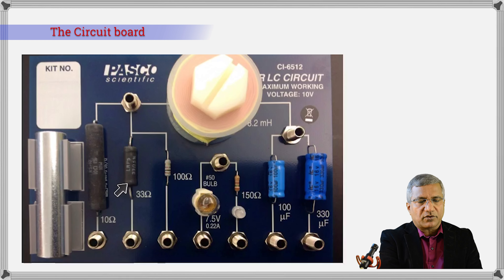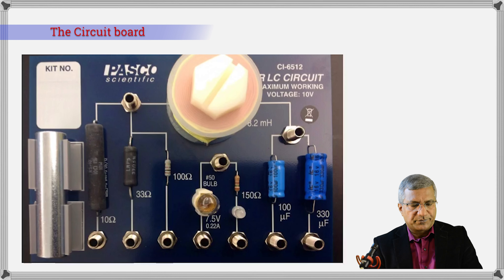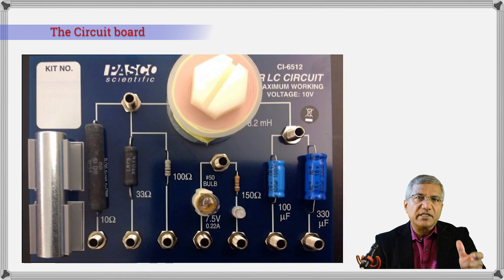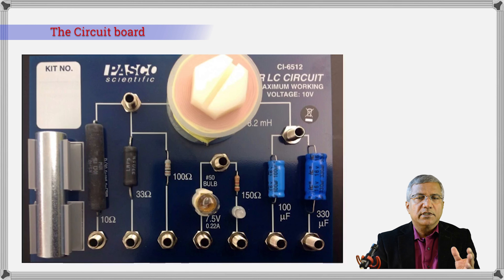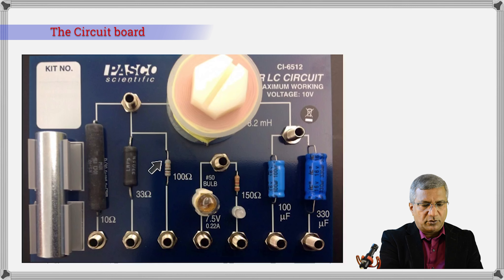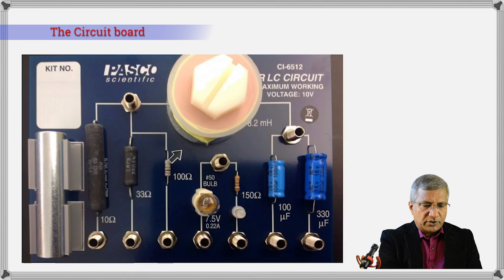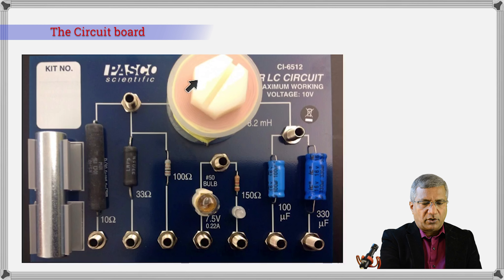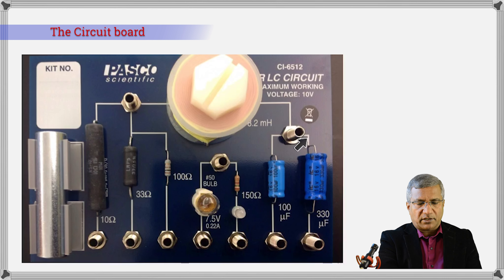The circuit board has many resistances: 10 ohms, 33 ohms, 100 ohms, 330 microfarads, and so on. In the simulator circuit I'm actually using 200 ohms, but in the physical lab we would use 100 ohms with the 330 microfarad capacitor. You can see the 100 ohms is connected through this coil — a solenoid — which connects to the capacitor.